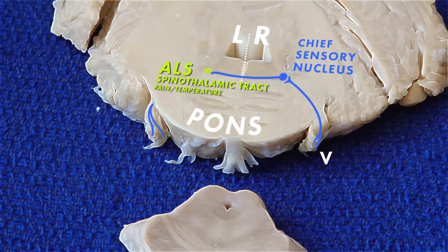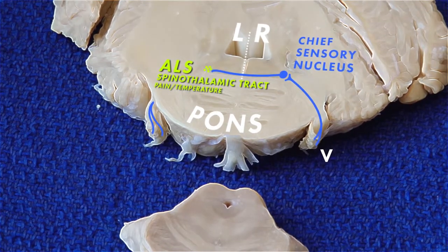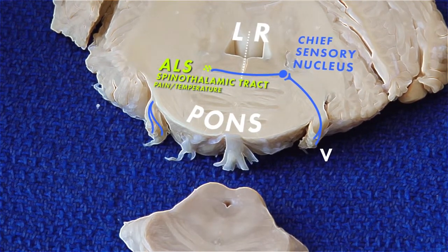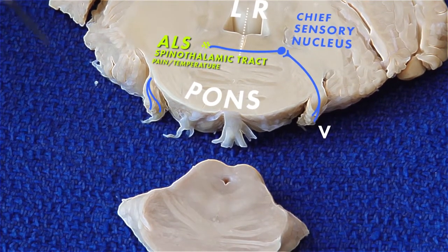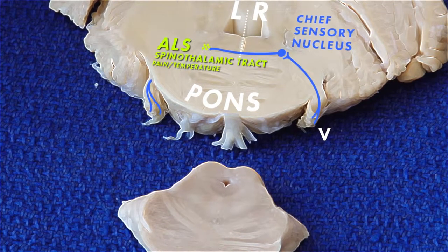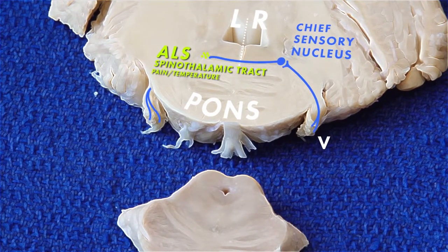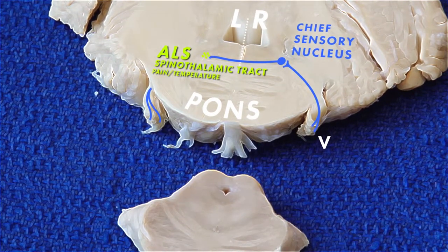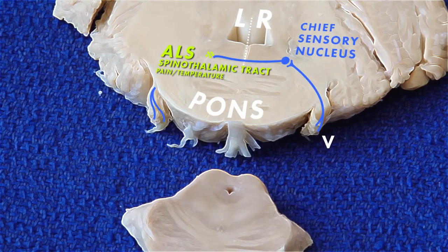Now, the pathway that came up with pain and temperature is also in this area. And so we have both of these pathways converging in the middle of the pons. And from there on, they are called the trigeminal thalamic pathway. And they run close to the body sensation pathway. And they are going to head up toward the midbrain.